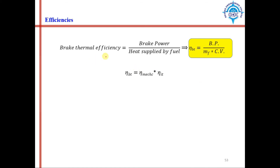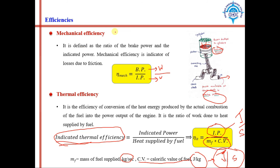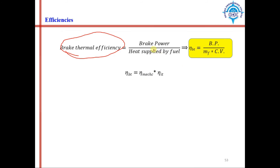Brake thermal efficiency is how much brake power is generated from the heat supplied by fuel. Input is heat energy of fuel and output is brake power. So brake thermal efficiency equals brake power divided by (Mf × CV). Mathematically, brake thermal efficiency equals mechanical efficiency multiplied by indicated thermal efficiency, which you can verify by simple multiplication.